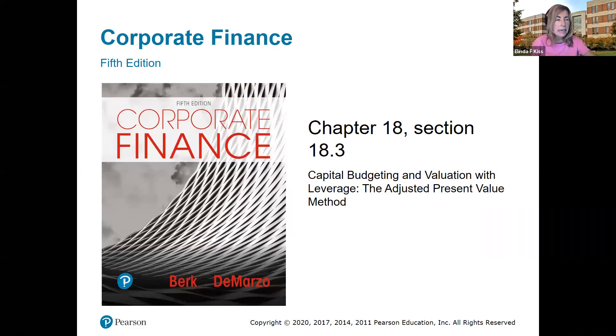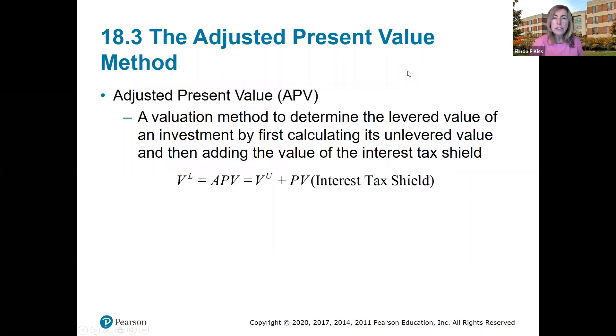APV — the Adjusted Present Value Method. The Adjusted Present Value Method is a valuation method to determine the levered value of an investment by first calculating its unlevered value and then adding the value of the interest tax shield.